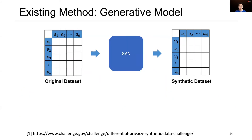Another method is to train a deep generative model, such as GAN, in a differentially private manner, and generate a synthetic dataset using this GAN. GAN has shown to perform well on image datasets. However, through our experience in the Differential Privacy Synthetic Data Challenge hosted by NIST, the GAN-based method cannot achieve satisfiable performance for high-dimensional tabular data.